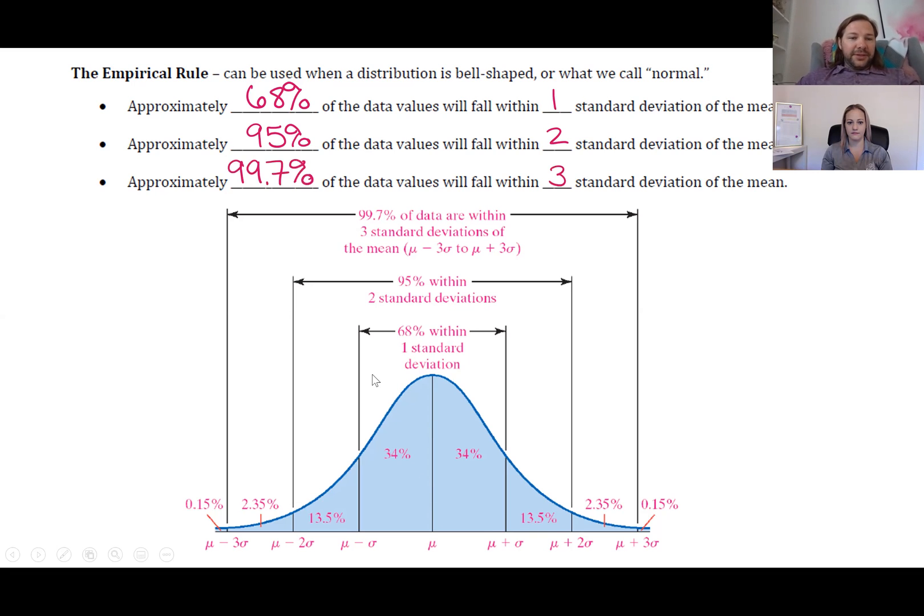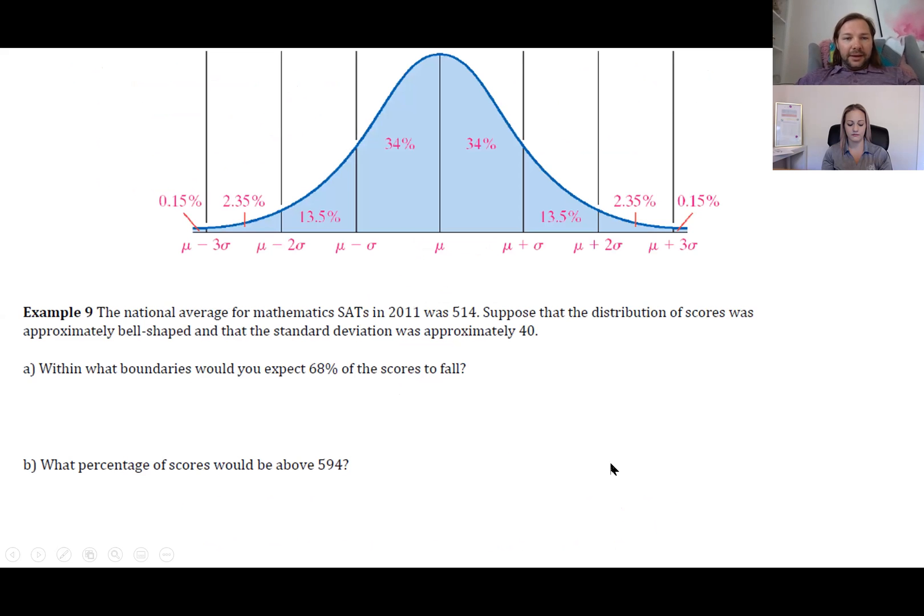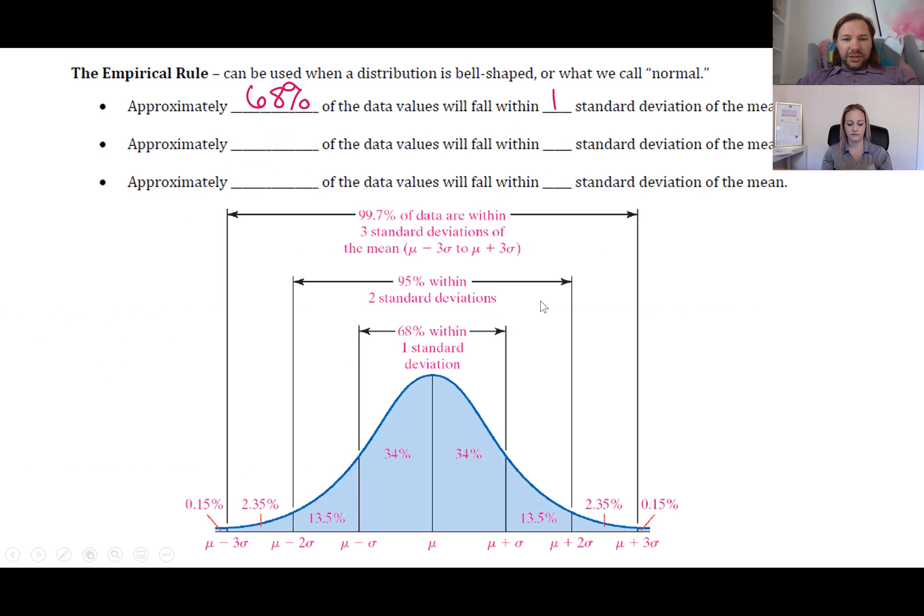Finally, the empirical rule says about 99.7% of the data falls within three standard deviations. So basically 99.7% of the data falls within three standard deviations of the mean because you have a nice bell-shaped curve. This has some interesting applications.